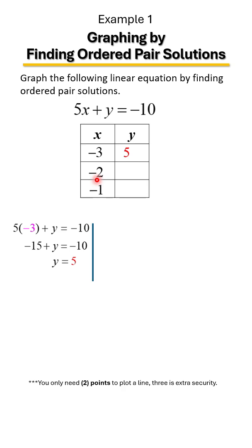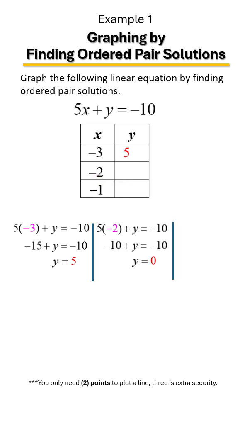Next, let's plug in negative 2. We have 5 times negative 2, which gives us negative 10 out front. The last step is to add 10 to each side, and Y equals 0. So when X is negative 2, Y is 0.